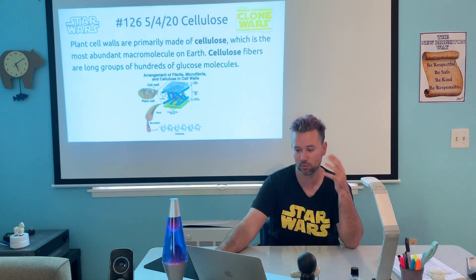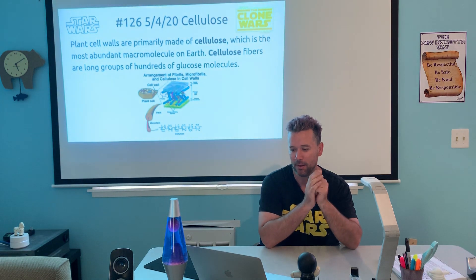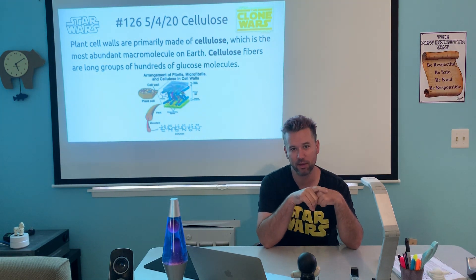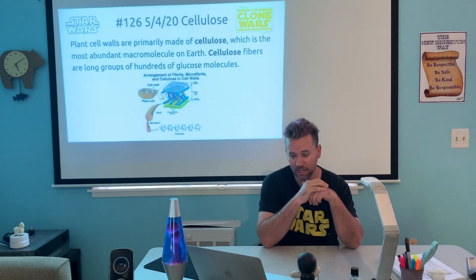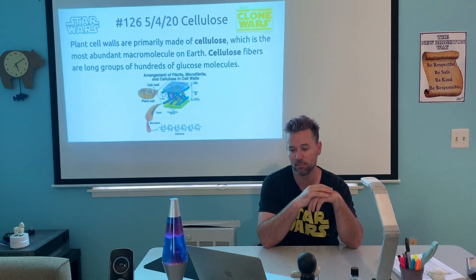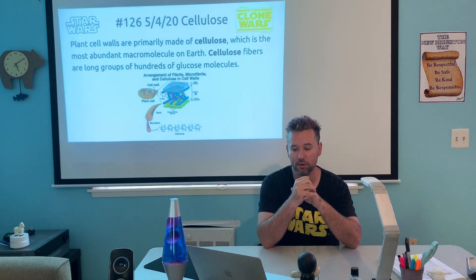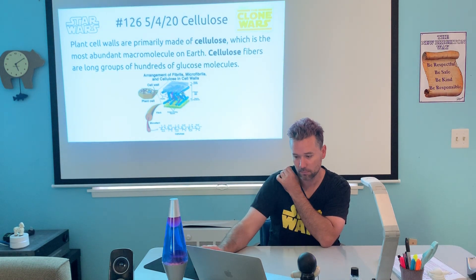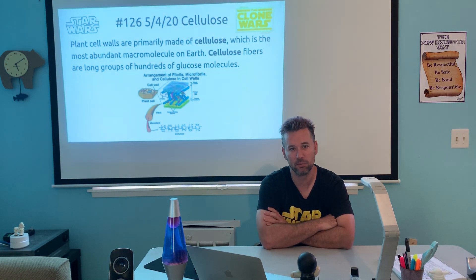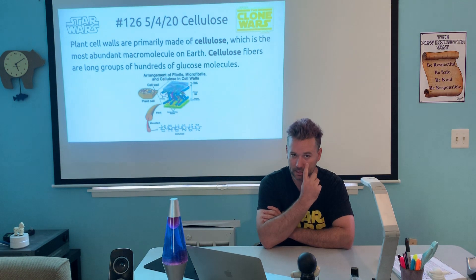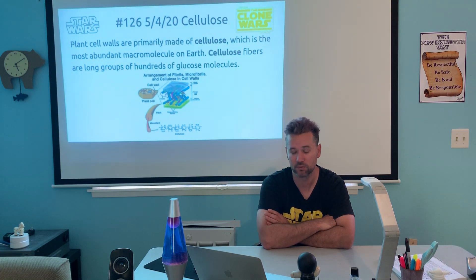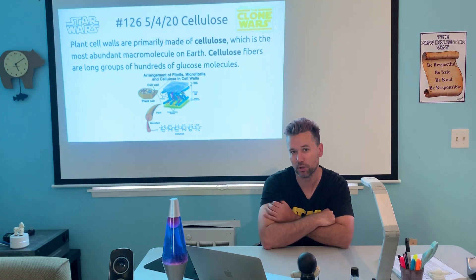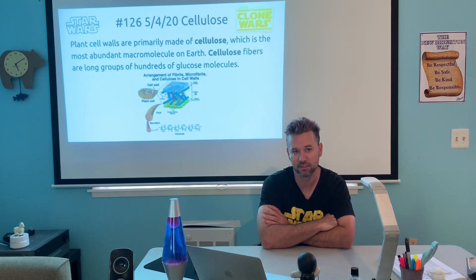So here we are — Magic Monday, May 4th. Our word today is cellulose, number 126 already. As I mentioned on Friday, plant cell walls are primarily made of cellulose, which is the most abundant macromolecule on Earth. Cellulose fibers are long groups of hundreds of glucose molecules. It's found in paper products, toilet paper, and wood. Cotton is the purest form of cellulose you can get — cotton is about 90% cellulose.